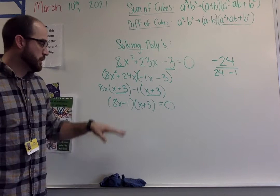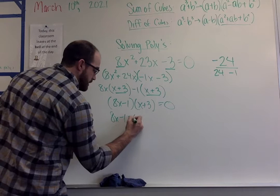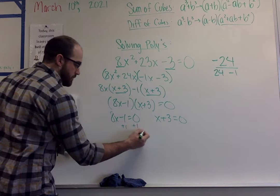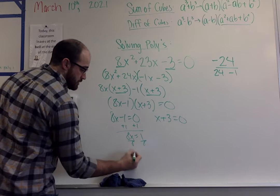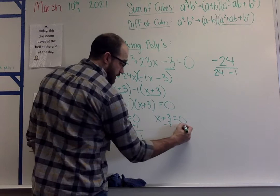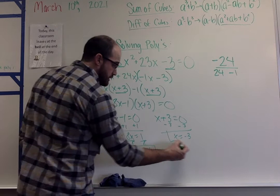The solving portion is just putting each of these parentheses equal to 0. So I would have 8x - 1 = 0 and x + 3 = 0. For the first one you'd add 1, divide by 8, so you'd have x = 1/8 or subtract 3 and we get x = -3. So here are my two solutions to this problem.